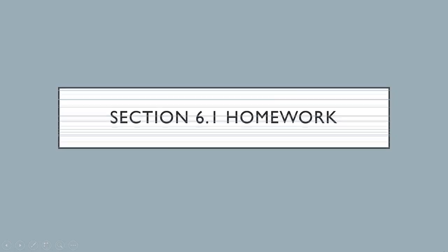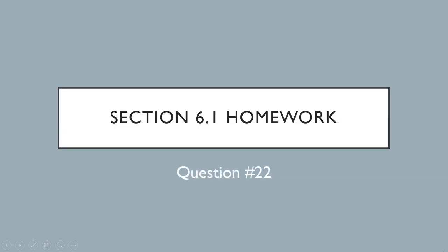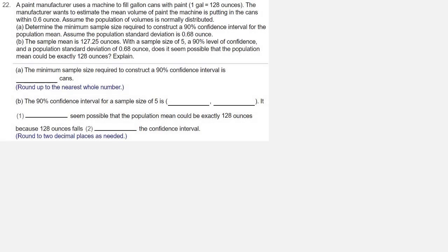We're looking at homework for section 6.1, question number 22. A paint manufacturer uses a machine to fill gallon cans with paint. One gallon equals 128 ounces. The manufacturer wants to estimate the mean volume of paint the machine is putting in the cans within 0.6 of an ounce.